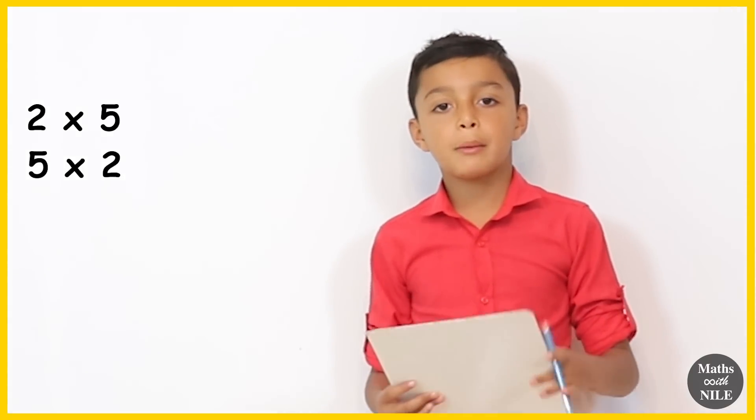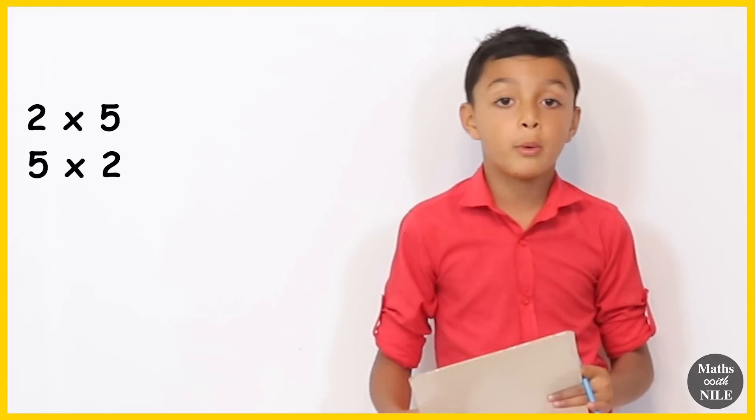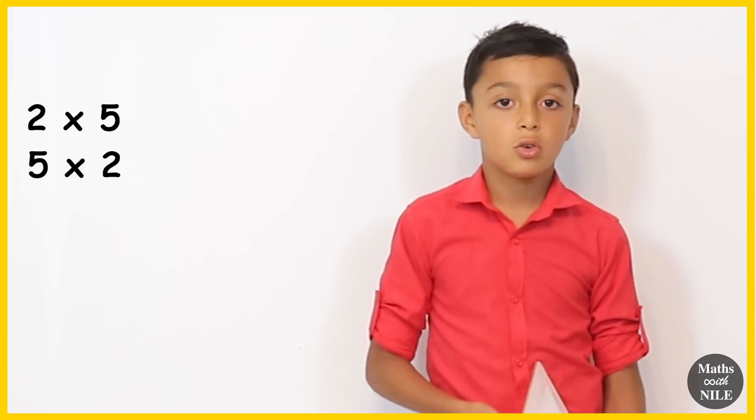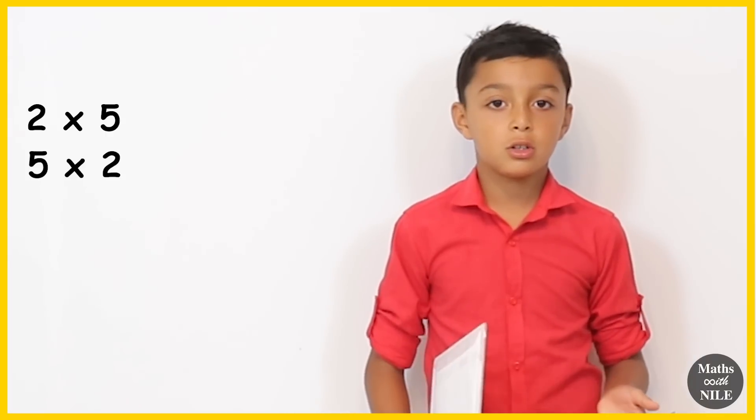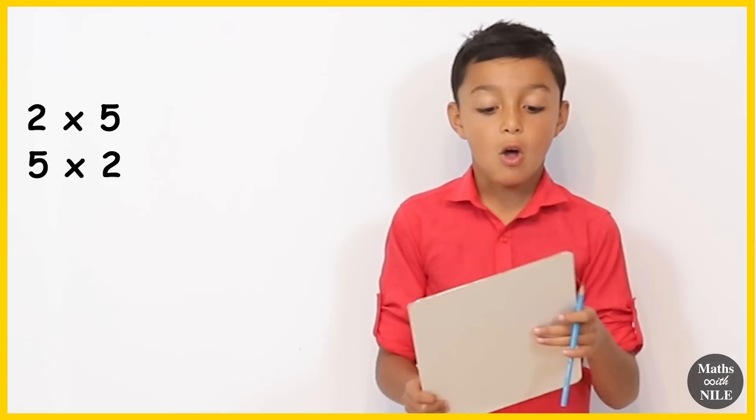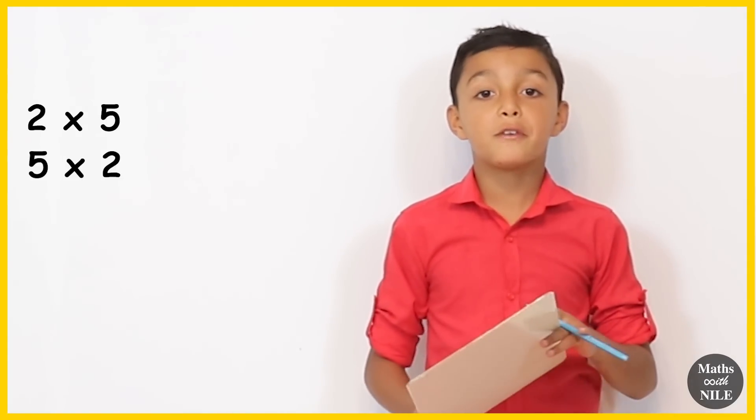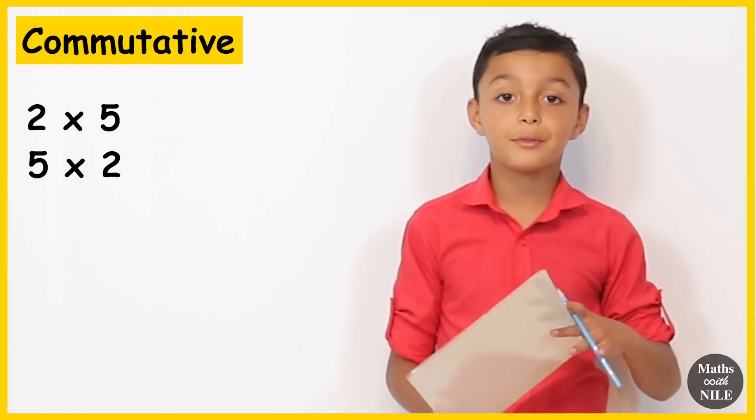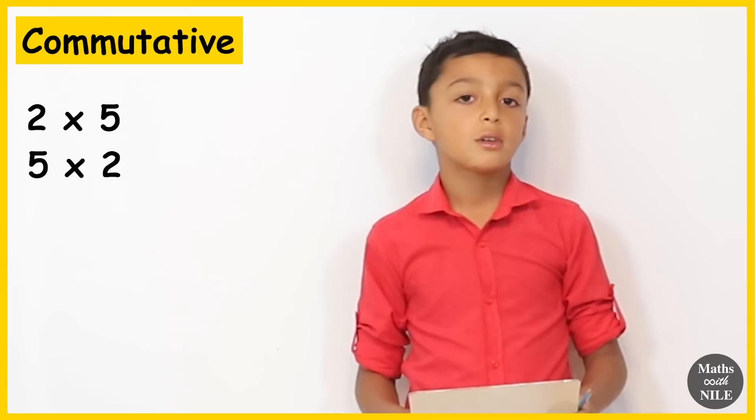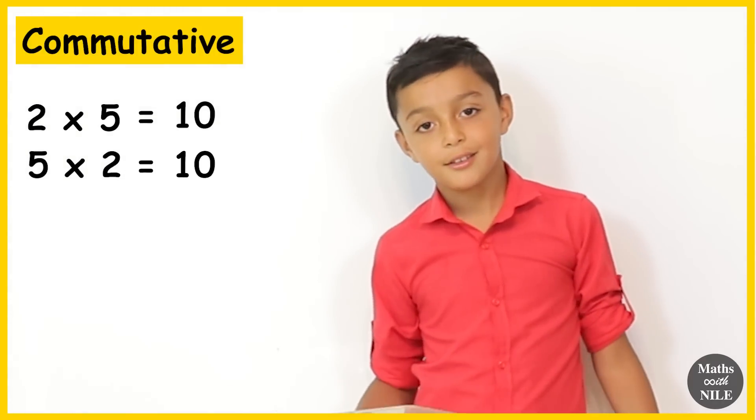Even though the numbers are getting switched around, it will always be the same answer. It's not like that in subtraction or division, but in addition and multiplication, if you switch it around it will still equal the same thing and the word for that is commutative. Excellent explanation Niall. So 2 times 5 is? 2 times 5 is 10. And 5 times 2 is? Also 10. Brilliant.